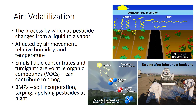Pesticides become airborne in many ways, including volatilization, drift, or through movement as dust-borne particles. The process by which a pesticide changes from a liquid to a vapor is called volatilization. Volatilized pesticides leave the application site and move into the atmosphere, often traveling long distances. Compounds that vaporize or evaporate at low temperatures are said to be highly volatile.